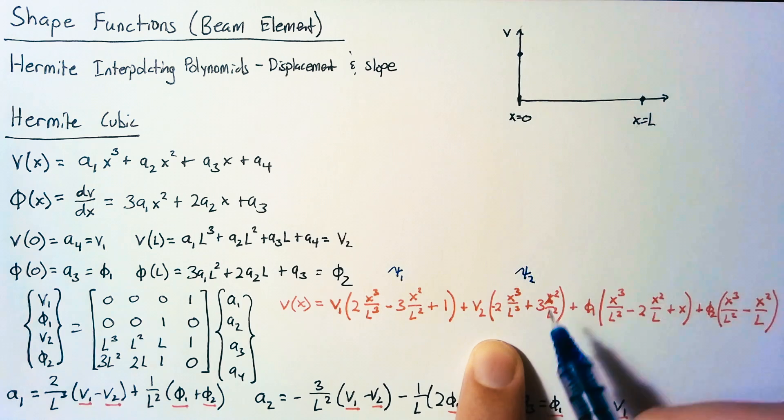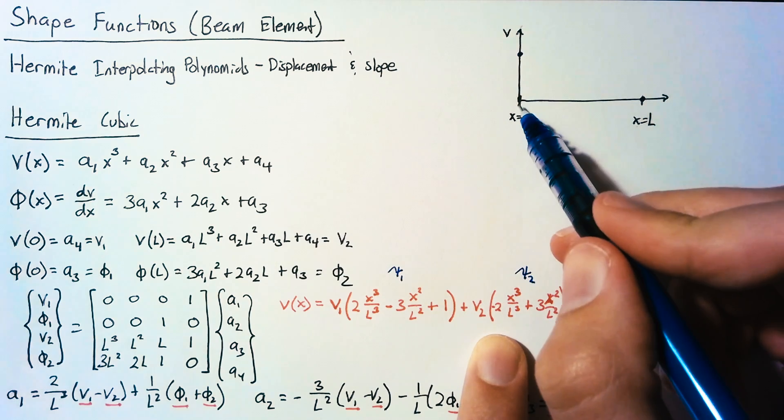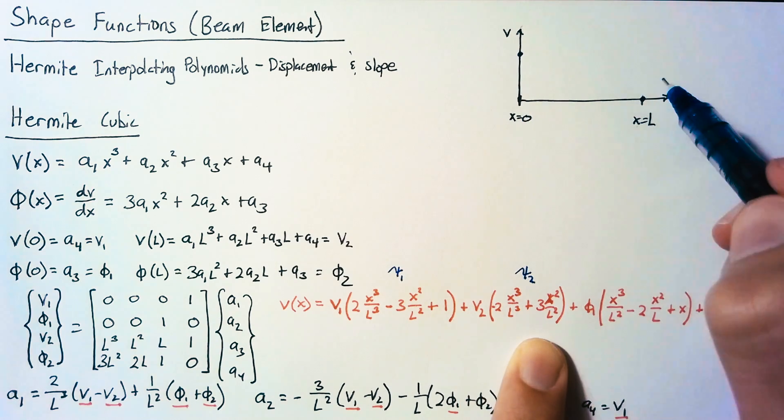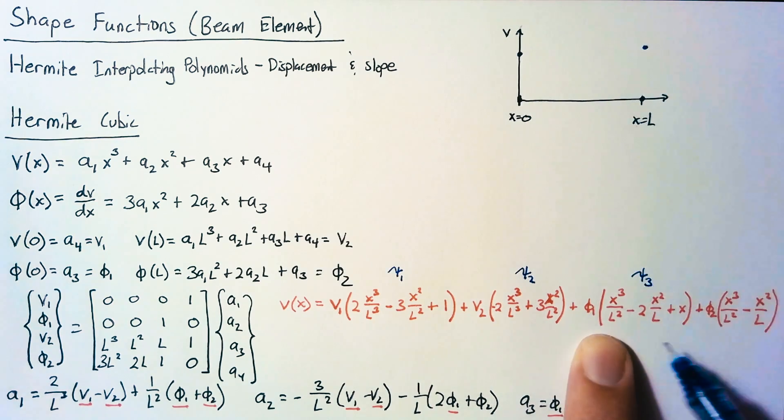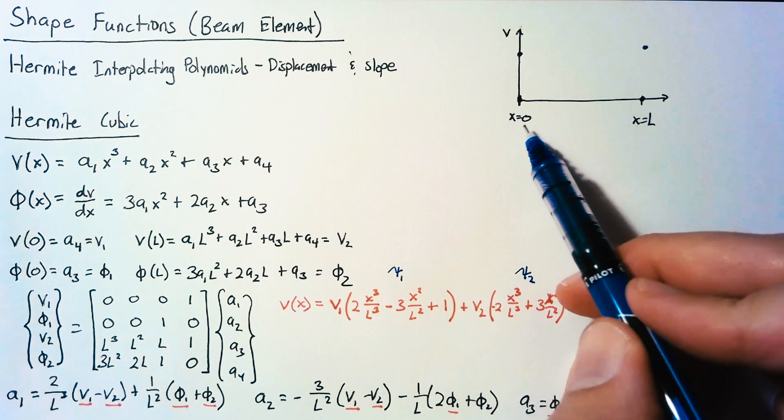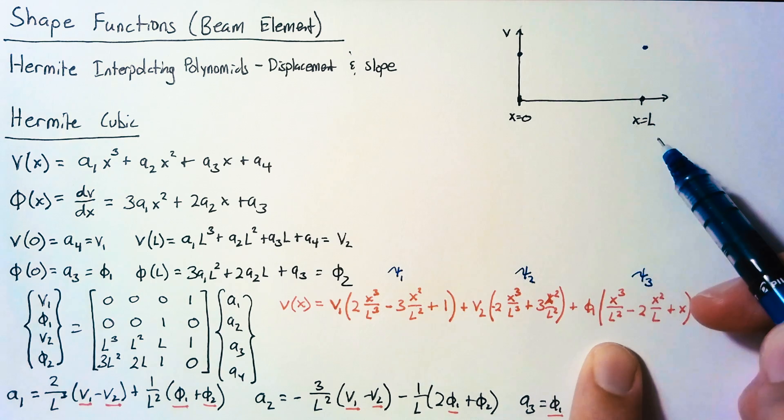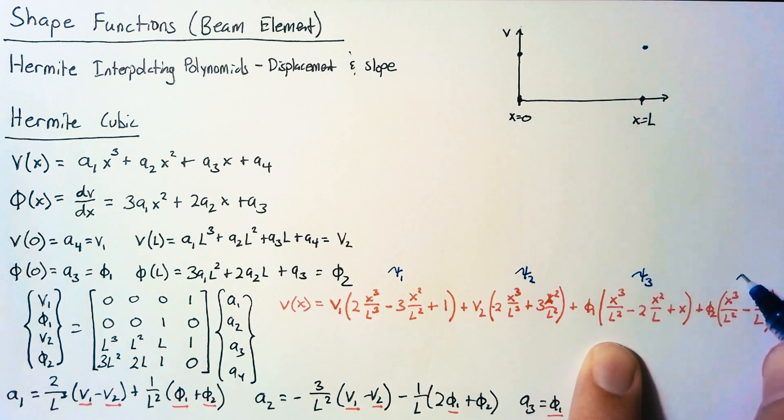Psi2 has a value of 0 at x equals 0 and a value of 1 at x equals l. Psi3 is going to be 0 at both x equals 0 and x equals l. And the same is true of psi4.